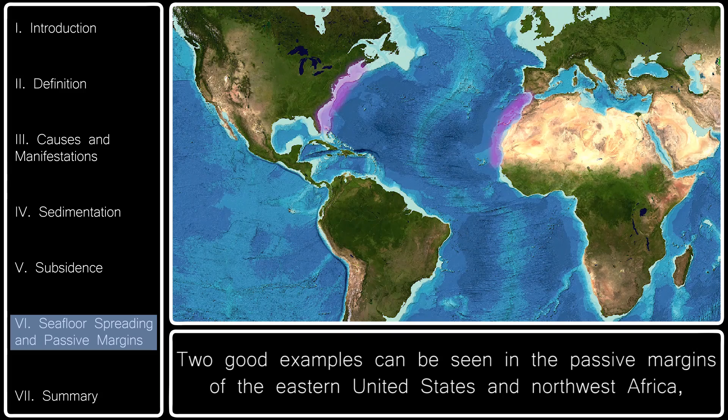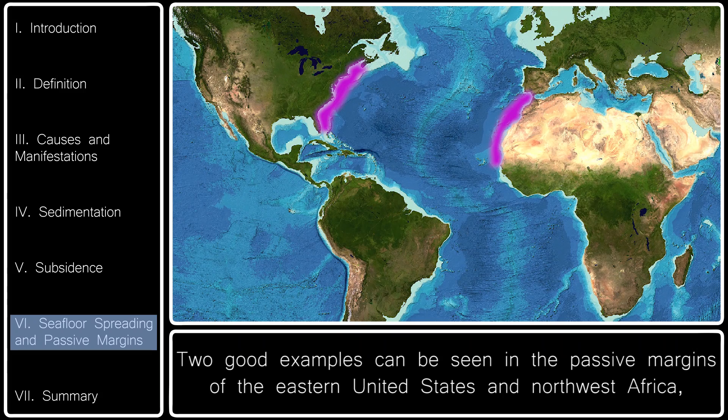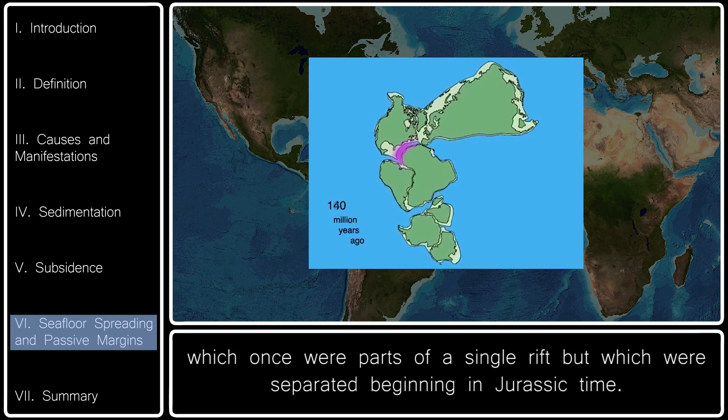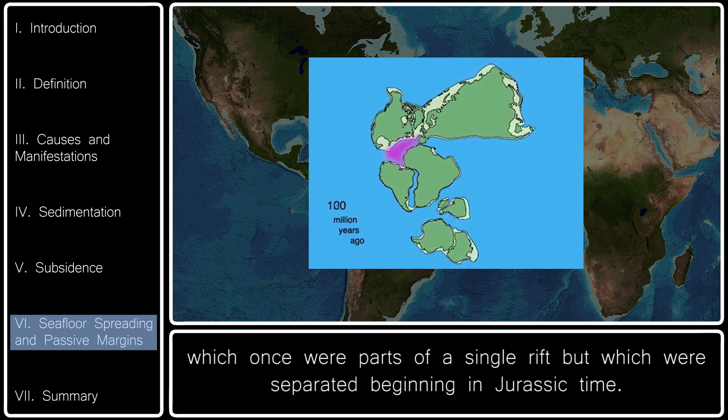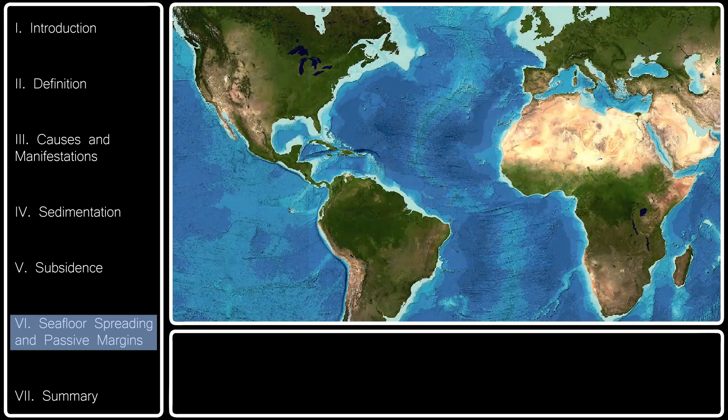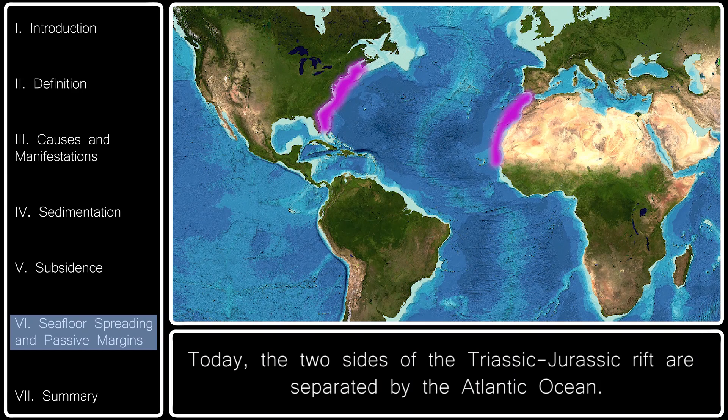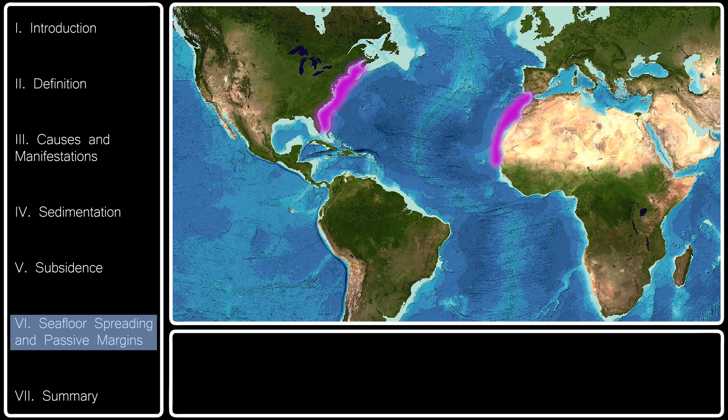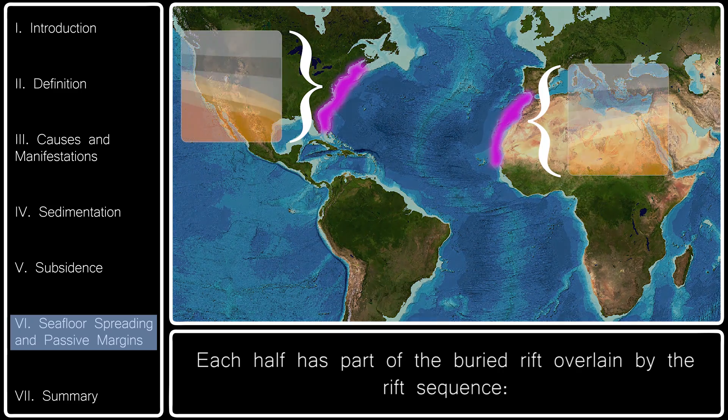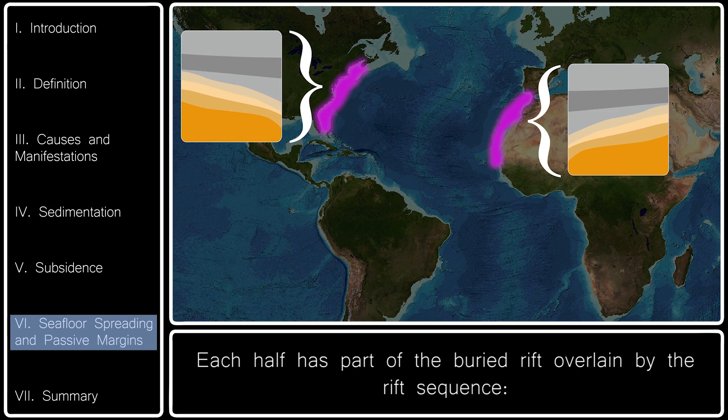Two good examples can be seen in the passive margins of the eastern United States and northwest Africa, which once were part of a single rift but which were separated beginning in Jurassic time. Today, the two sides of the Triassic-Jurassic rift are separated by the Atlantic Ocean. Each half has part of the buried rift overlain by the rift sequence.